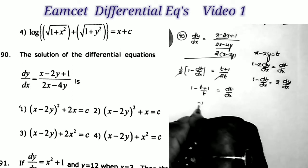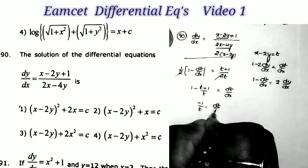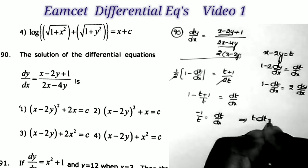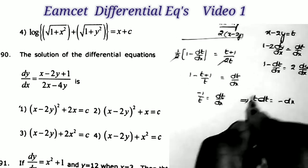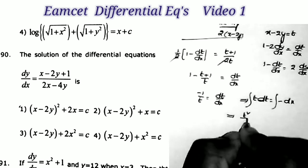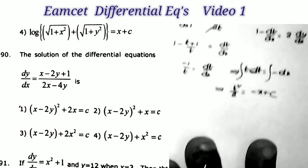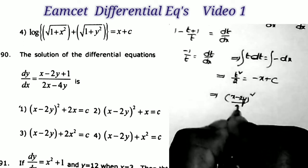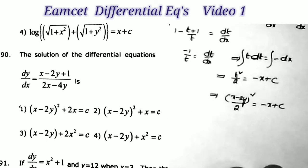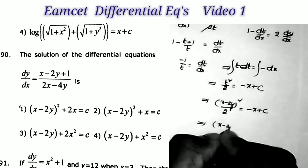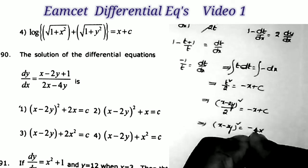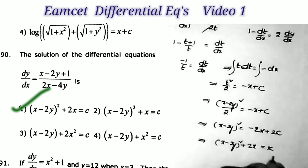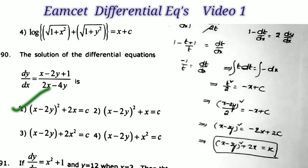The 2's cancel, so 1 − (t+1)/t = dt/dx, which gives −1/t = dt/dx. Cross multiplying: t dt = −dx. Integrating: t²/2 = −x + c. Substituting back t = x−2y: (x−2y)²/2 = −x + c, so (x−2y)² = −2x + 2c. Therefore the answer is (x−2y)² + 2x = k, where k = 2c. This is the first option.